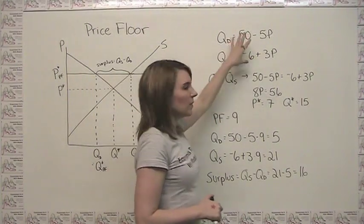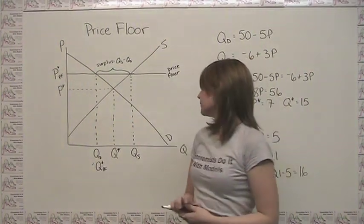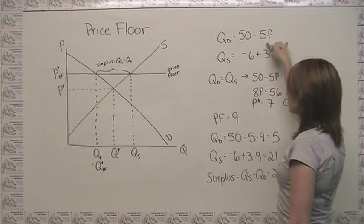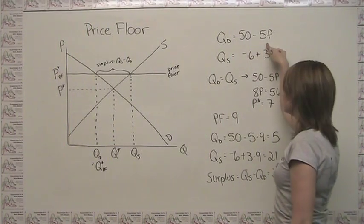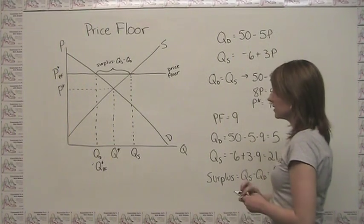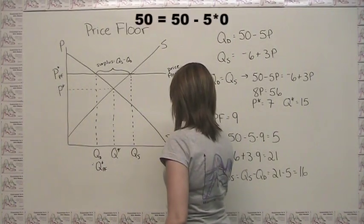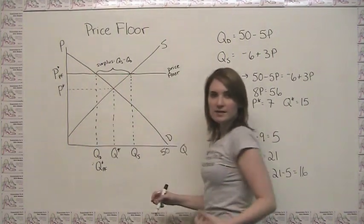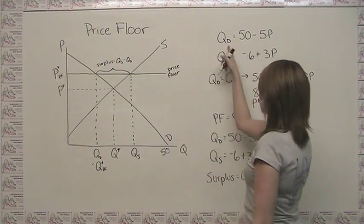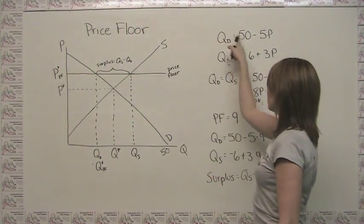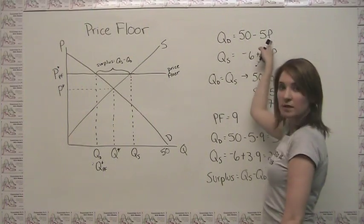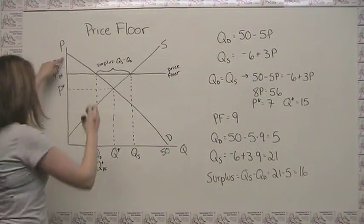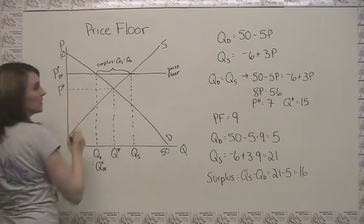We can think about what these look like on our graph, and we'll notice that our quantity axis intercept is where price is equal to 0, and if price is 0, quantity is 50, so our demand curve comes down at 50 here. And our price axis intercept is where quantity equals 0, so if 0 is equal to 50 minus 5p, that means that our price axis intercept here is at a price of 10.